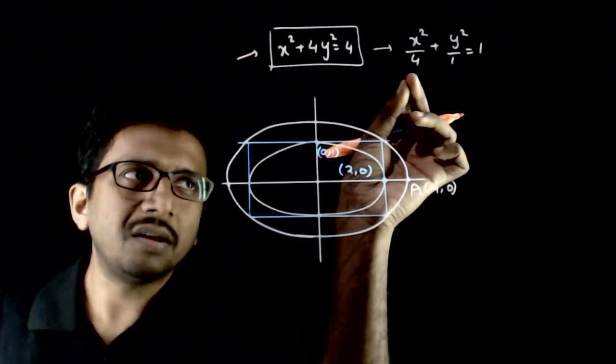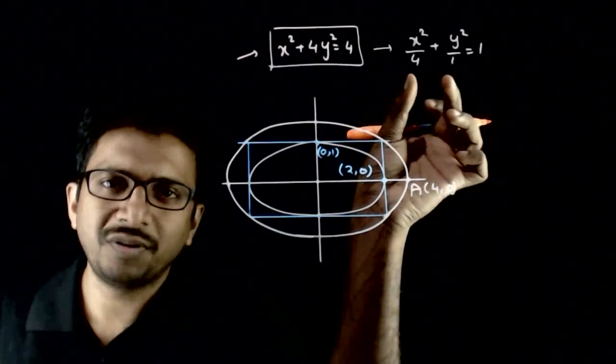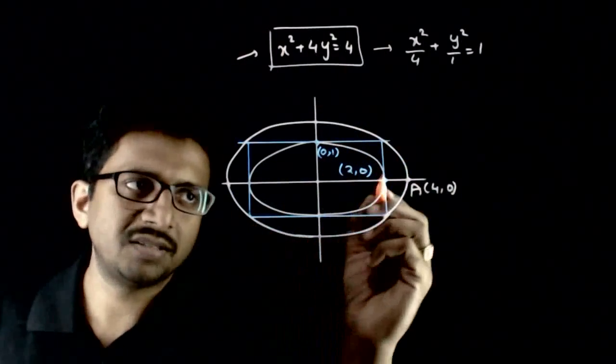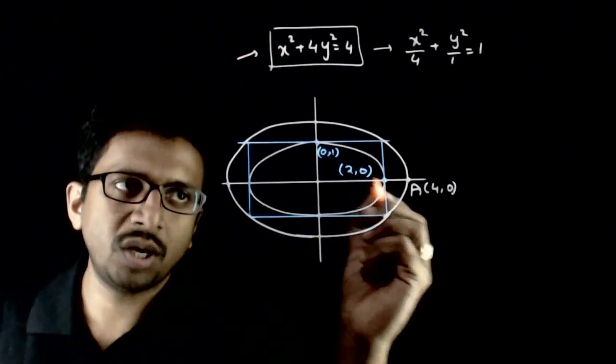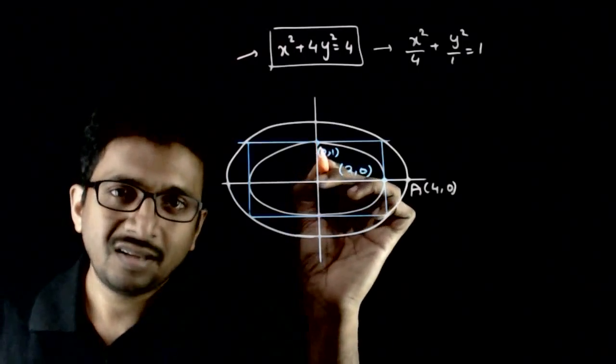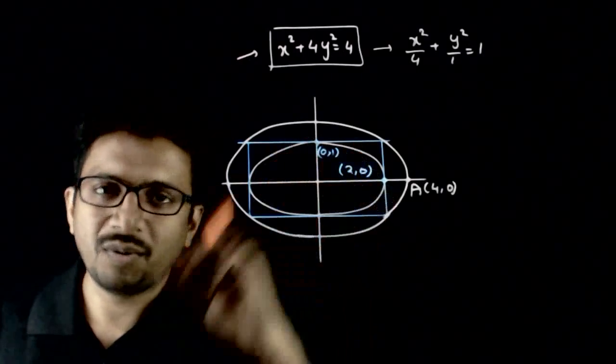You know that the values of a and b corresponding to this ellipse are 2 and 1. That means one of the vertices of this ellipse is (2,0) and the extremity of the minor axis is (0,1).